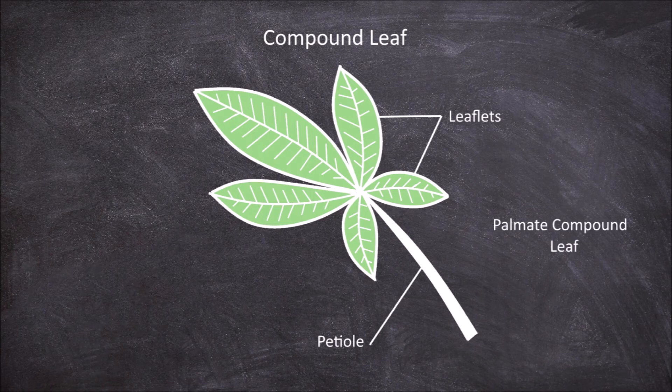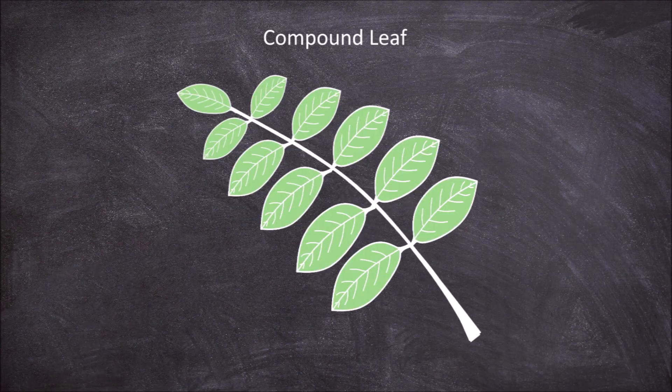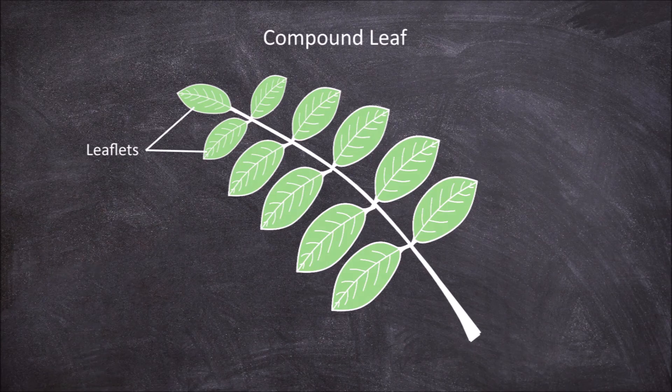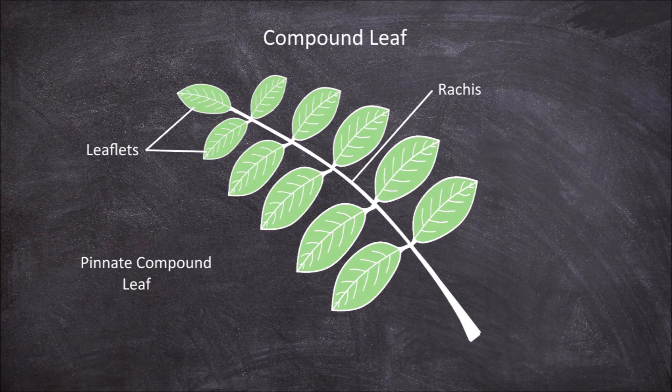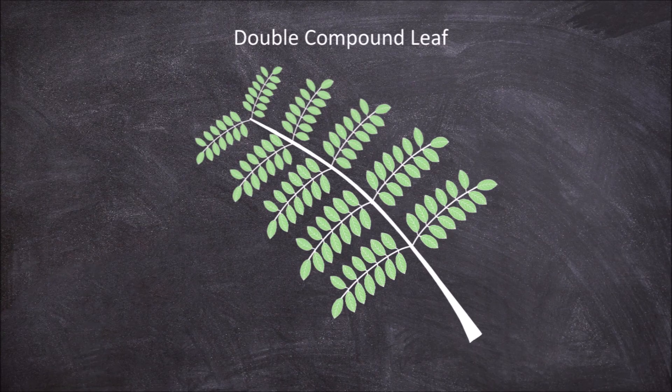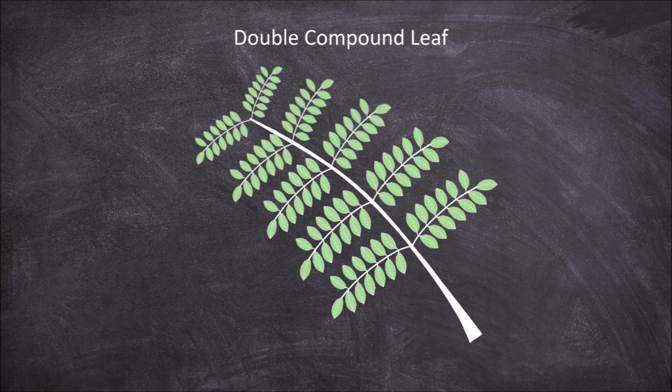A compound leaf can also have a pinnate pattern where the leaflets are found on each side of a central stalk called the rachis. These are called pinnate compound leaves. In addition the leaf can be a double compound leaf. In these leaves the leaflets are also divided into sets of even smaller leaflets.